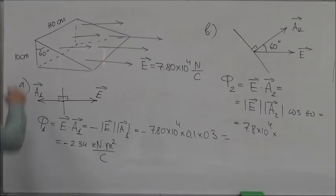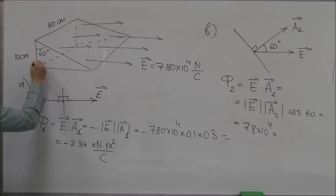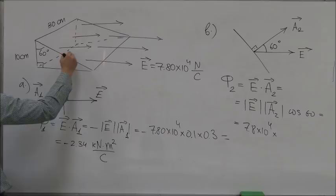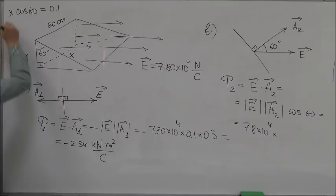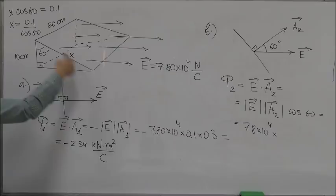How do we calculate the magnitude of A? Well, we know that this angle here is 10 centimeters. If you look at this triangle, it's a right triangle, and if we call this side X, then you can say that X cosine of 60 is equal to 0.1. So X is equal to 0.1 over cosine of 60.